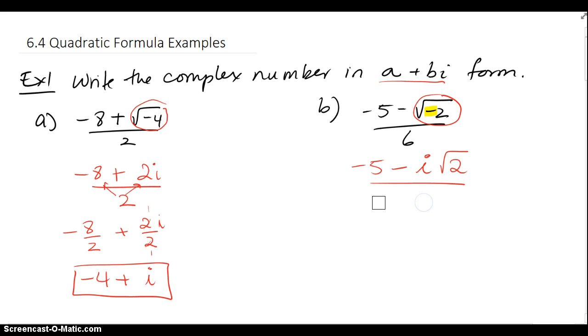And that's all over 6. And again, the 6 is divided into both pieces, so I have negative 5 over 6 as my first piece, and then minus i root 2 over 6 as my second piece.